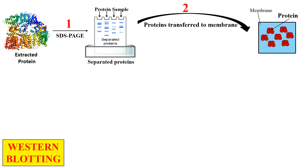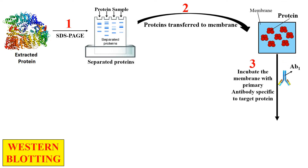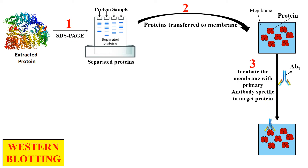After transfer to the membrane, the antibody which is specific to the target protein is added. The target protein is the protein which we want to isolate or detect. Since this antibody is specific to the target protein, it will only bind to that target protein. If the target protein is present, it will bind; if there is no target protein, there will be no binding. This target-specific antibody is termed the primary antibody. After incubation, we perform a washing step to remove unbound antibodies.